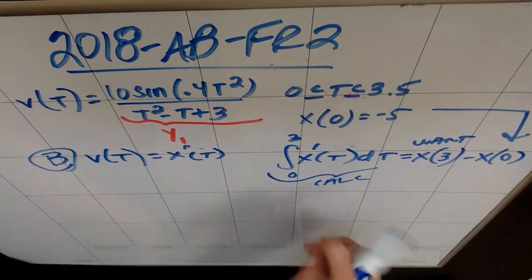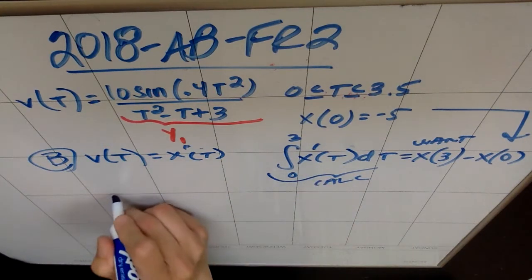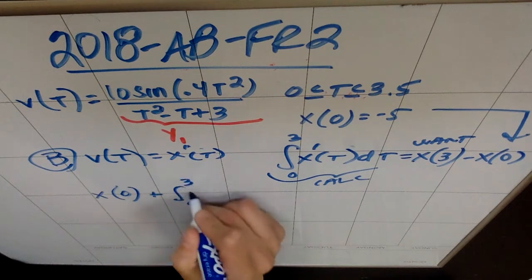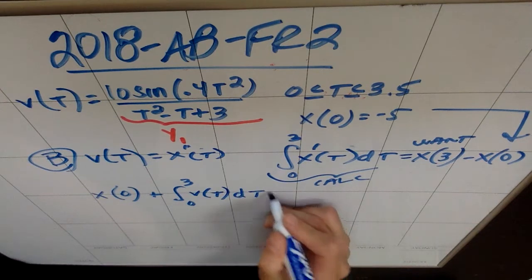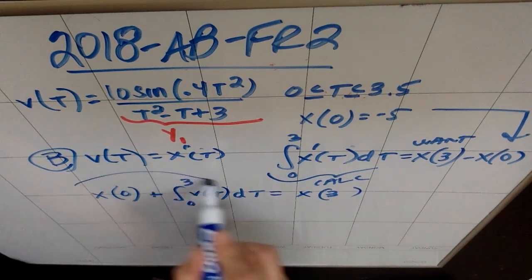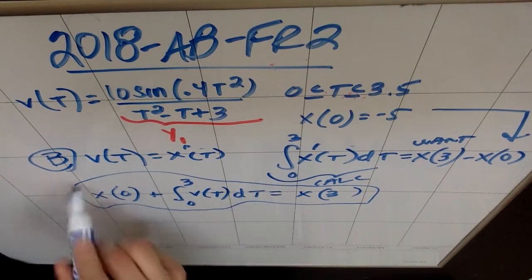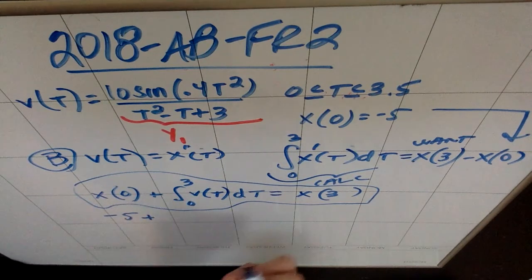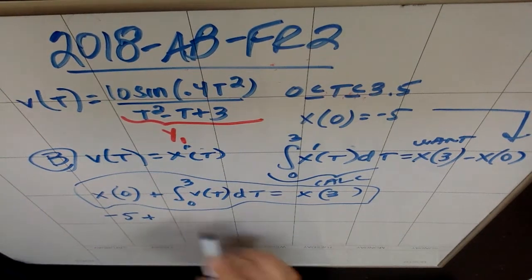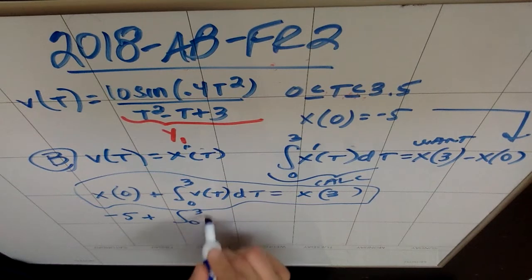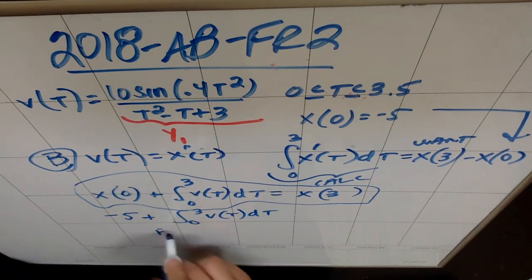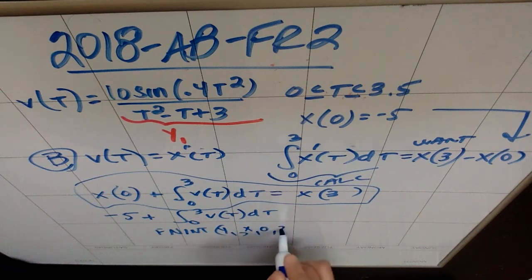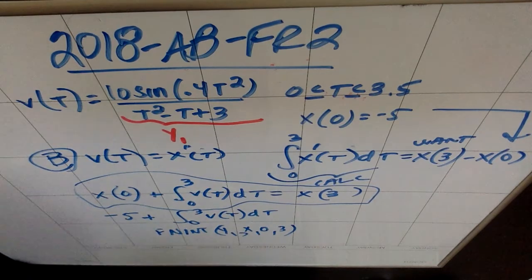It's worth noting that velocity is the same as x prime of t. So if you were to integrate x prime of t from 0 to 3 with respect to t, based on the first fundamental theorem of calculus, you would get x of 3, which is the thing that you want, minus x of 0, which is a quantity that you absolutely know. This is a thing that you can make your calculator do. V of t is the same as x prime of t, I'm going to say that if I add x of 0 plus the integral from 0 to 3 of v of t with respect to t, I'm going to get x of 3.